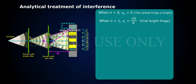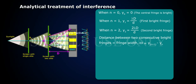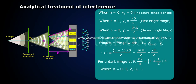When N equals 1, Y1 equals lambda D by d — this is the first bright fringe. When N equals 2, Y2 equals 2 lambda D by d — the second bright fringe. The distance between two consecutive bright fringes equals fringe width omega equals Y(N+1) minus YN, giving omega equals lambda D by d.